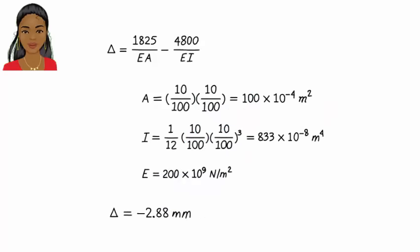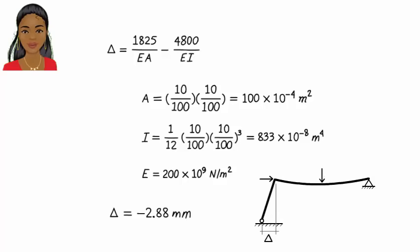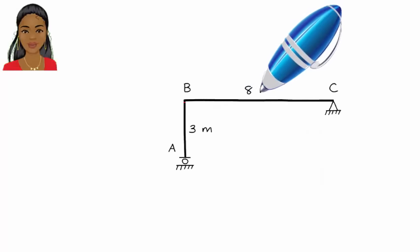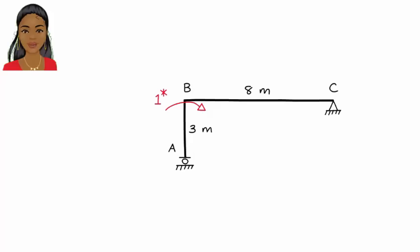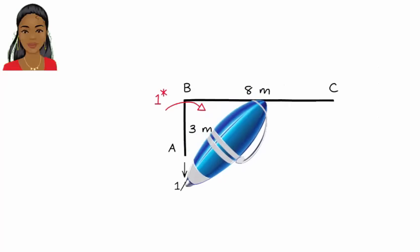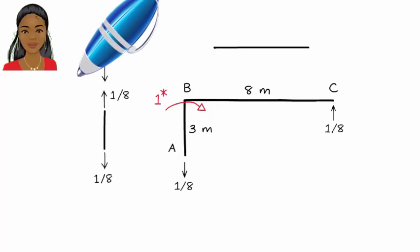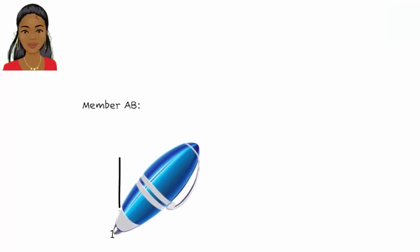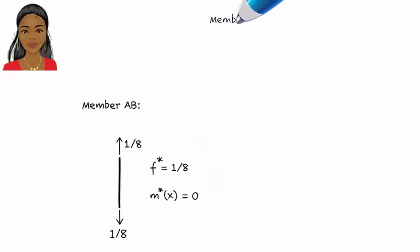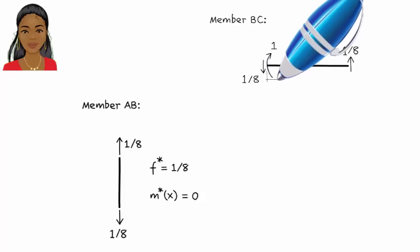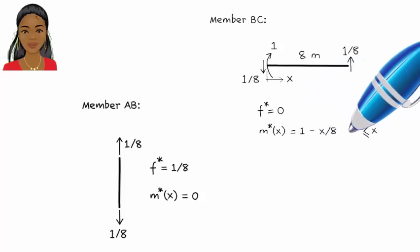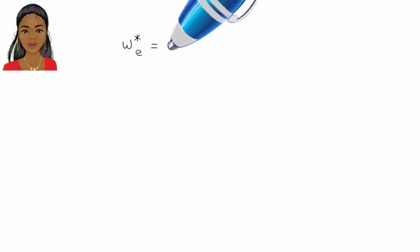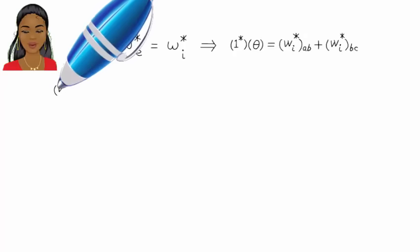We assumed that A displaced to the right. The negative sign, however, indicates that the direction of the displacement is opposite to the assumed one. So the joint displaces to the left by 2.88 millimeters. To determine rotation at joint B, place a virtual unit moment at B. Then analyze the frame in order to determine the member forces. The equation representing the principle of virtual work can be written, and therefore the rotation of joint B is obtained.